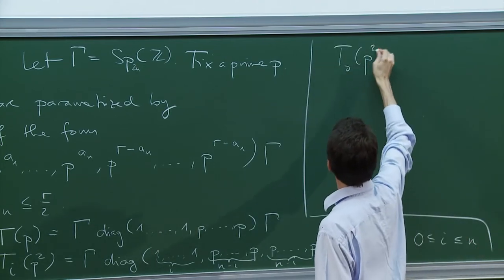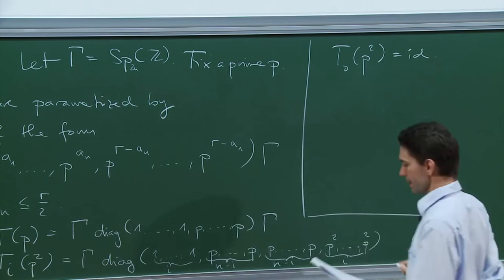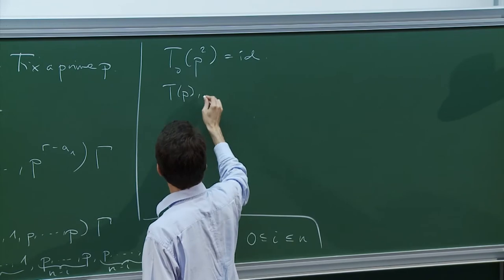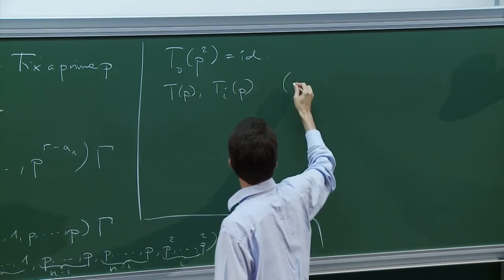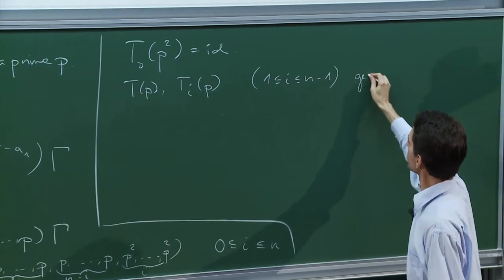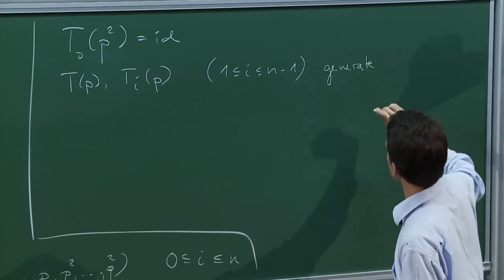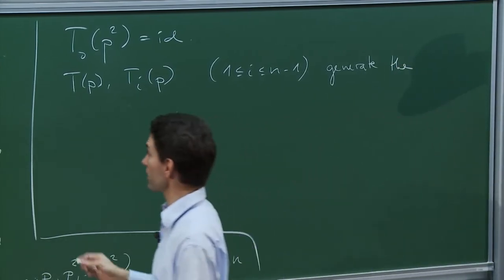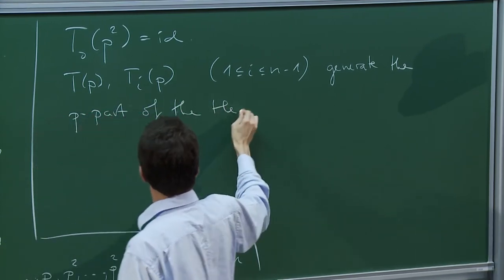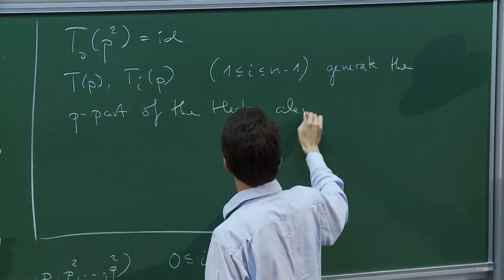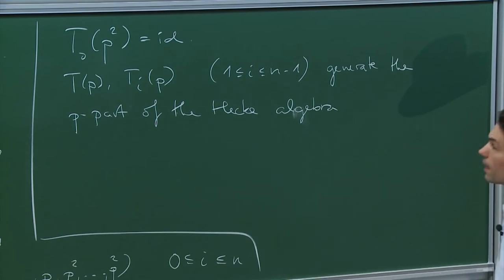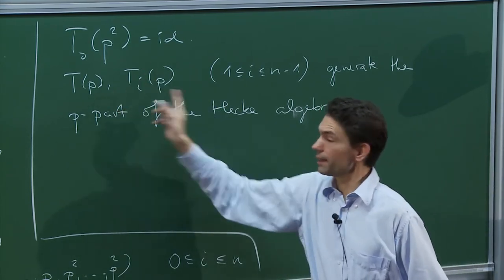So T_0(p²) is the identity. It turns out that T(P) and T_i(P) for 1 ≤ i ≤ n−1 generate the P-part of the Hecke algebra. Every Hecke operator in the p-part is a polynomial in these operators.